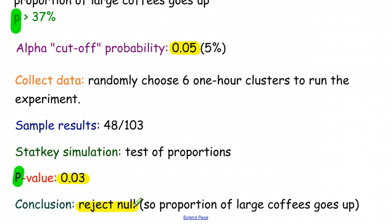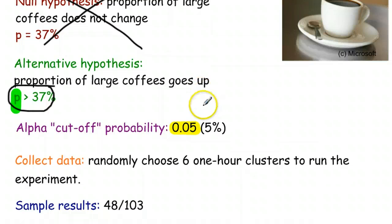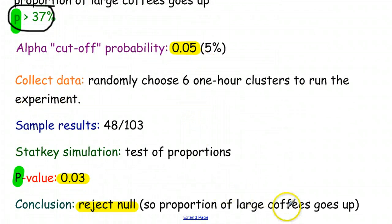Our goal is to smash the null, and that's exactly what we did. This is unlikely enough that we reject the null. And when you reject the null, there's only one hypothesis left to choose from. And that would be the alternative, that p is greater than 37% of the population, that the proportion of large coffees does in fact go up when you ask this new question.